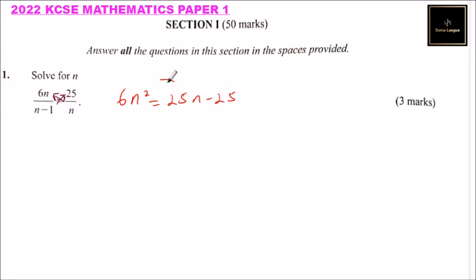So we take 25n and minus 25 to the other side. 25n becomes minus. So we have 6n squared minus 25n. This becomes positive once it crosses, plus 25 equals 0. So this is a quadratic equation.